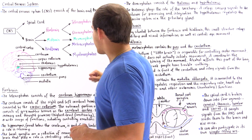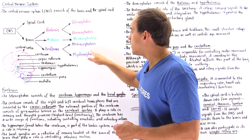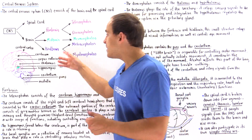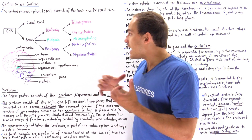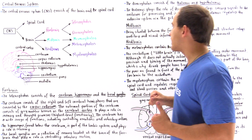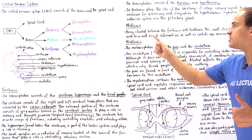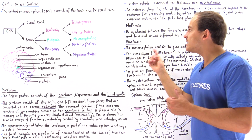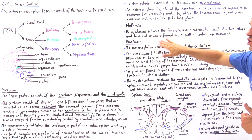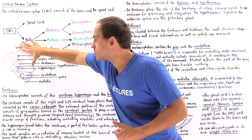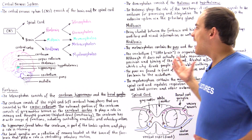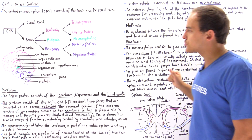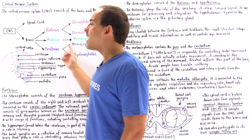The midbrain consists of the mesencephalon, the green section situated right between the forebrain and the hindbrain. Being in this position, this small section relays auditory and visual information between the top and bottom portions of the brain. The midbrain is also involved in controlling the movement of our eyes.